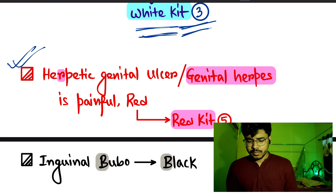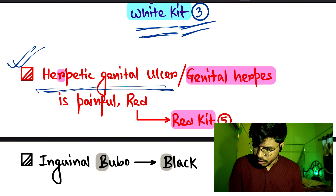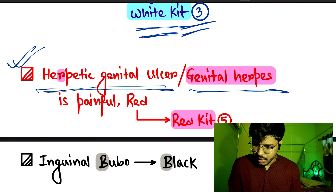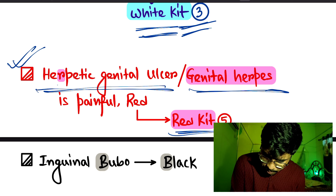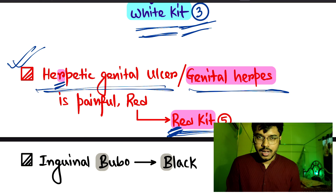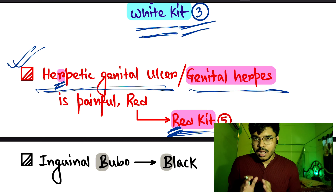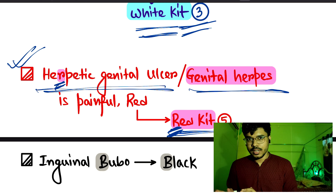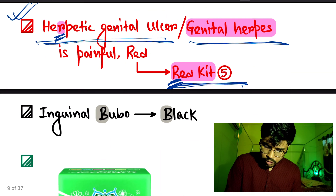For herpetic genital ulcer or genital herpes, the kit number is red kit — kit number five. To remember this, use the mnemonic: 'R for herpetic, R for red.' The R in herpetic links to red kit.